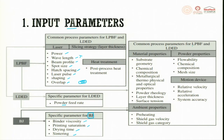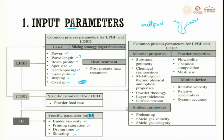Common parameters for laser PBF and laser DED include material properties, ambient properties, powder properties, and motion. Material properties include substrate geometry, metal powder geometry, chemical composition, metallurgical, thermo-physical, and optical properties, along with electronic structures, powder rheology, layer thickness, and surface tension. Surface tension in the melt pool is important because it dictates how the molten material flows. Viscosity and temperature also play very important roles.